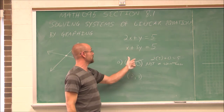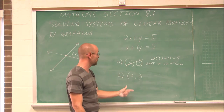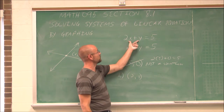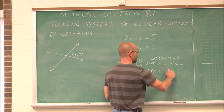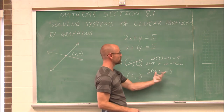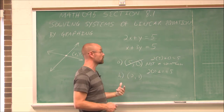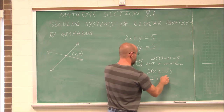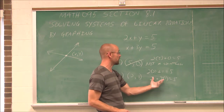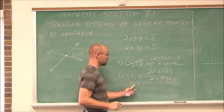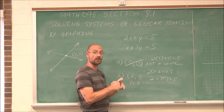If I did plug (5, 0) into the second equation, it would be true there. But it has to be true in both to be a solution to the system. Let's check (2, 1): 2 times the x value of 2 plus y, which is 1 — is that equal to 5? 2 times 2 is 4, plus 1 is 5. That's true, so it's true in the first line. Now checking the second equation: x is 2, plus 3 times y, which is 1 — does that equal 5? 2 plus 3 is 5. That's a true statement. It was true in both, so this is a solution to our system of linear equations. This is the point at which these two lines intersect, where they cross.